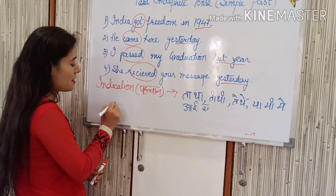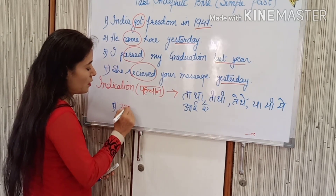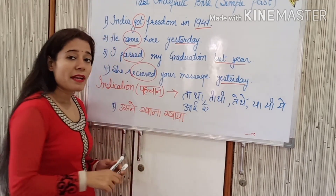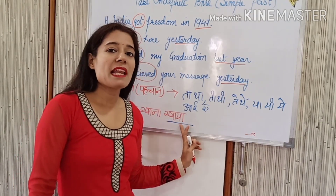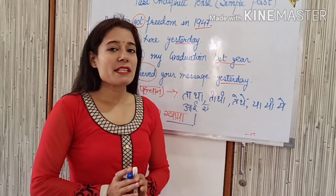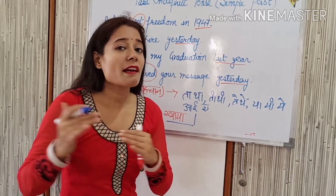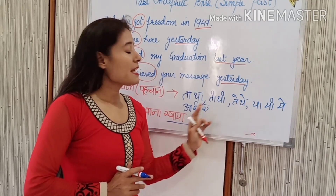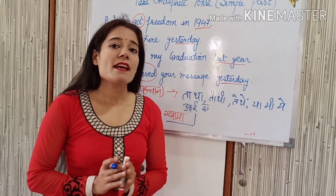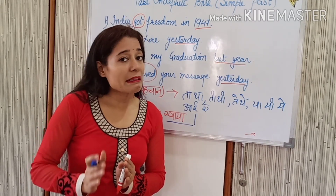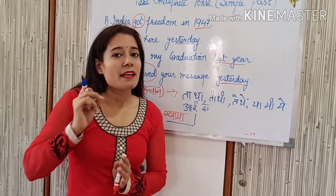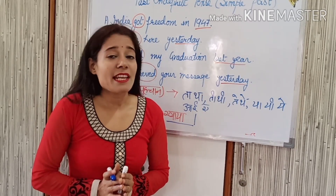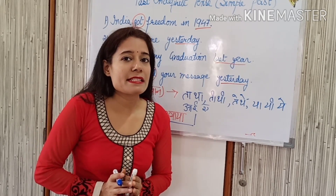For example: उसने खाना खाया — here the verb ends with 'या', so you can identify it as a past thing. वह आगरा गया, वह घूमने गया, उसने अपना काम पूरा किया — so endings like या, यी, ये, आ, or ता था, ती थी, ते थे — like वह घूमने जाता था, वह पढ़ता था, वह पतंग उड़ाता था — these letters at the end of the verb tell you it is a simple past or past indefinite tense sentence.